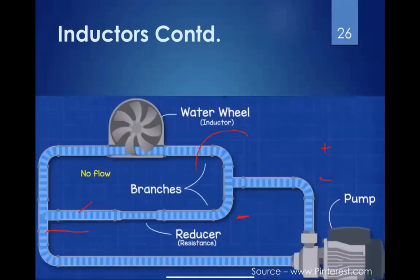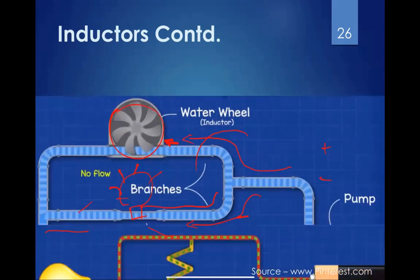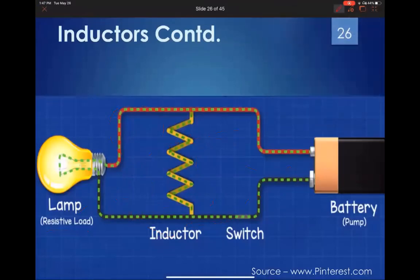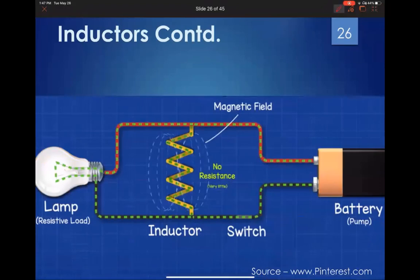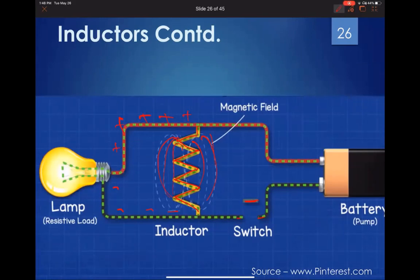Similar to the water analogy, current initially bypasses the inductor through a lower-resistance path. Once the inductor's resistance drops, current flows through the lamp and it lights up. When the switch is disconnected, the magnetic field in the inductor still holds stored charge, which continues to flow through the lamp briefly. Eventually, the stored energy is exhausted and the lamp goes off.